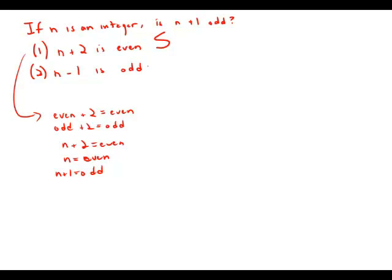Now let's consider statement number two. Statement number two says that n minus 1 is odd. Let's think about this. Let's just think of where these are located on the number line. N minus 1 is 1 less than n.